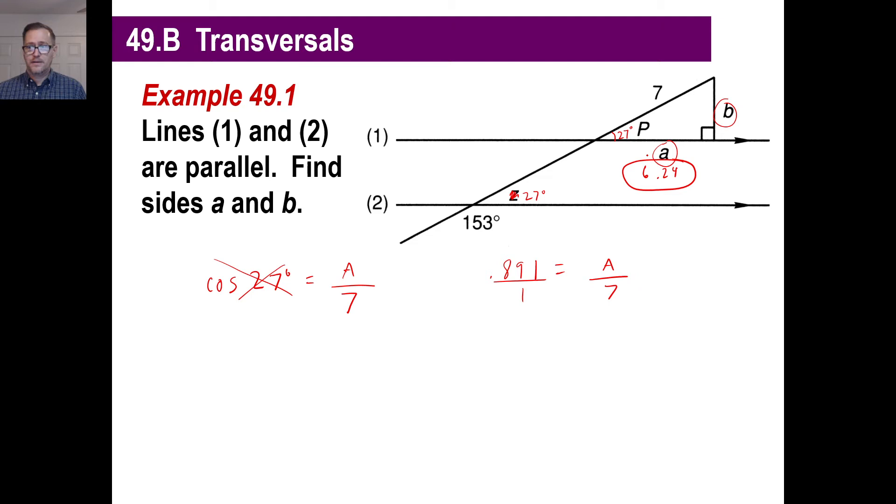Now, there are two ways to find B. Since this is a right triangle, you can go to that Pythagorean theorem and go 6.24 squared plus B squared equals 7 squared, if you want to. Or, you can just use a trig function. Let's just use that just for the practice. So, let's look at angle P. We're still dealing with angle P. What is the side B as it relates to angle P? Of course, it's the opposite, right?